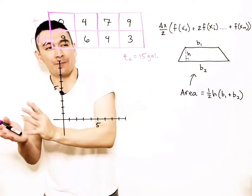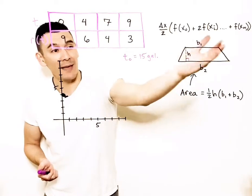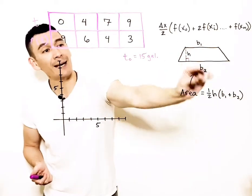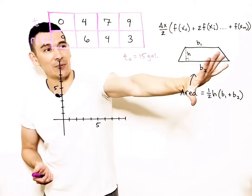So let's resort to a different method. Before we do that, recall from geometry the trapezoid. The area of a trapezoid is one-half the height, the altitude, times the sum of the bases. That's the area of the trapezoid.